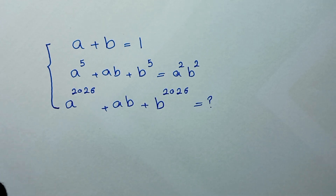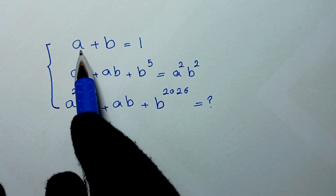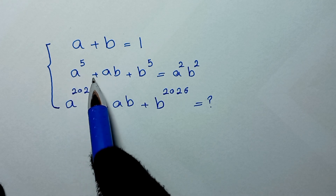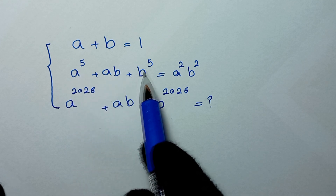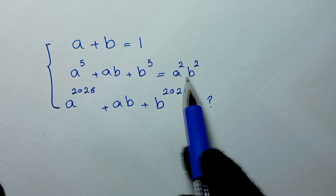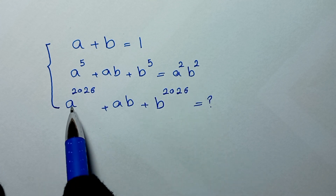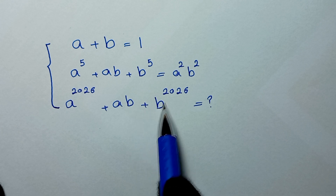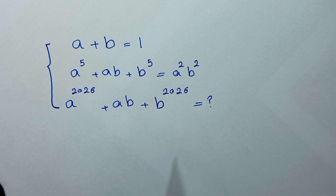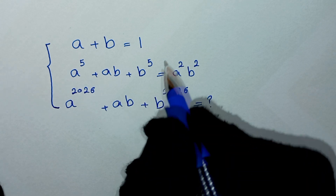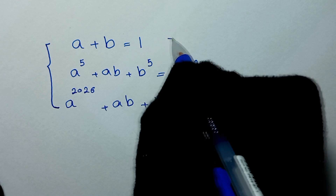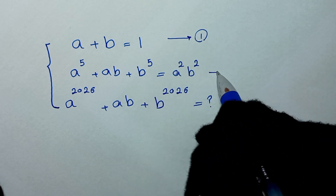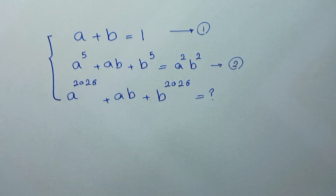Hello my friends, welcome to solve this math problem. We have a plus b is equal to 1 as equation 1, and a to the power of 5 plus ab plus b to the power of 5 is equal to a squared b squared as equation 2. We need to find the value of a to the power of 2026 plus ab plus b to the power of 2026. In the first step we start by labeling these as equation 1 and equation 2.